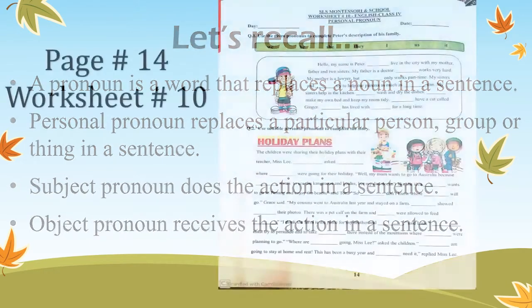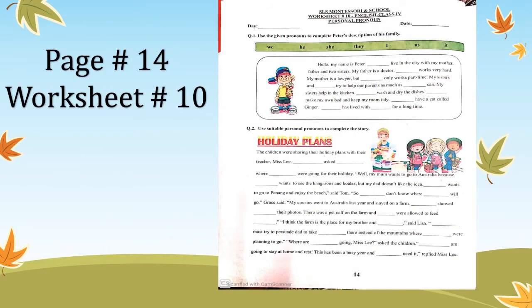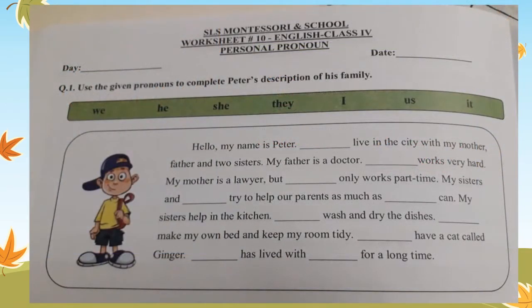Now, open up your SLS worksheet workbooks page number 14 and worksheet number 10. Write down today's date and day in the given spaces. Let's look at question number 1: use the given pronoun to complete Peter's description of his family. The pronouns to be used are given in the box: we, he, she, they, I, us and it.